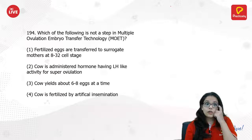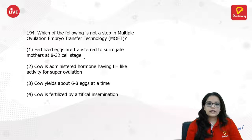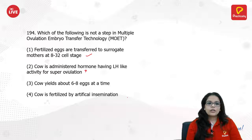Which of the following is not a step in MOET (multiple ovulation embryo transfer)? Fertilized eggs are transferred to a surrogate cow at 8-32 cell stage. The cow is administered hormones having LH-like activity for superovulation. The cow yields 6-8 eggs at a time and is fertilized by artificial insemination.